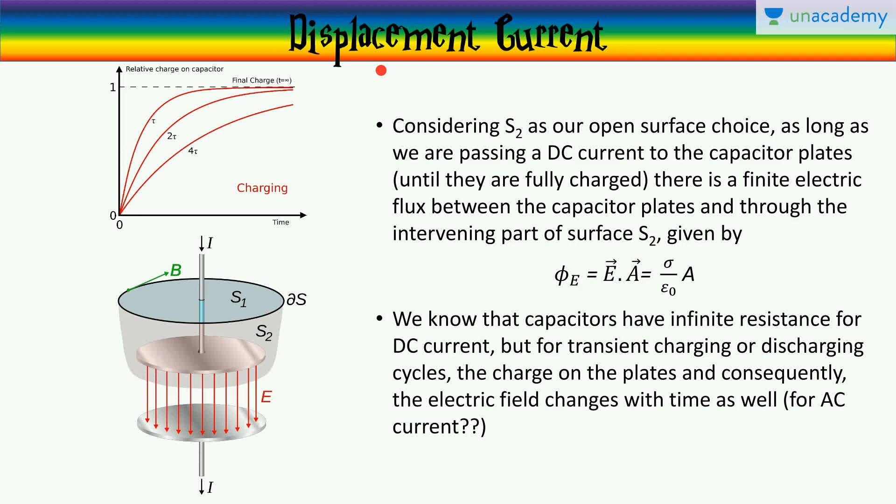Now, the electric flux which is changing in time is given by E dot A, where E is electric field between the capacitor plates, and A is the area of cross-section of the capacitor plates, where E is given by Gauss law, sigma by epsilon naught, where sigma is a surface charge density, and A the cross-section area.